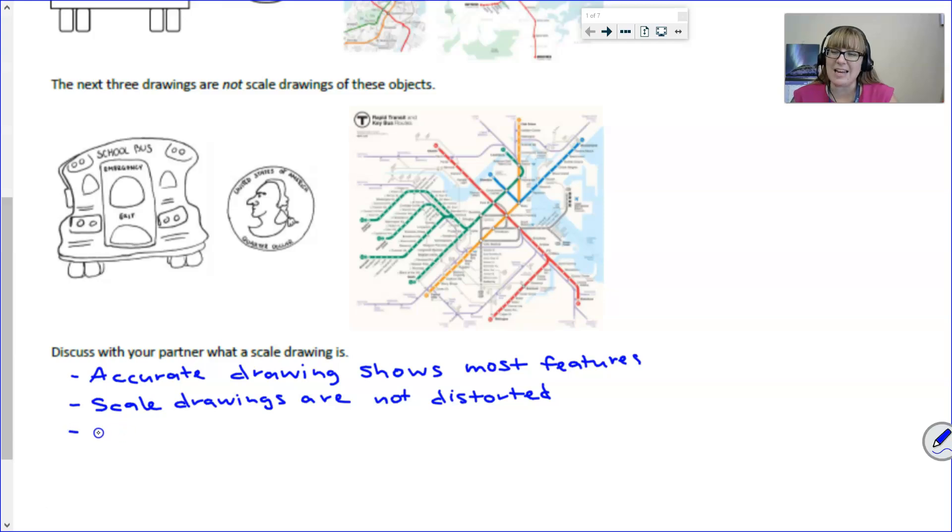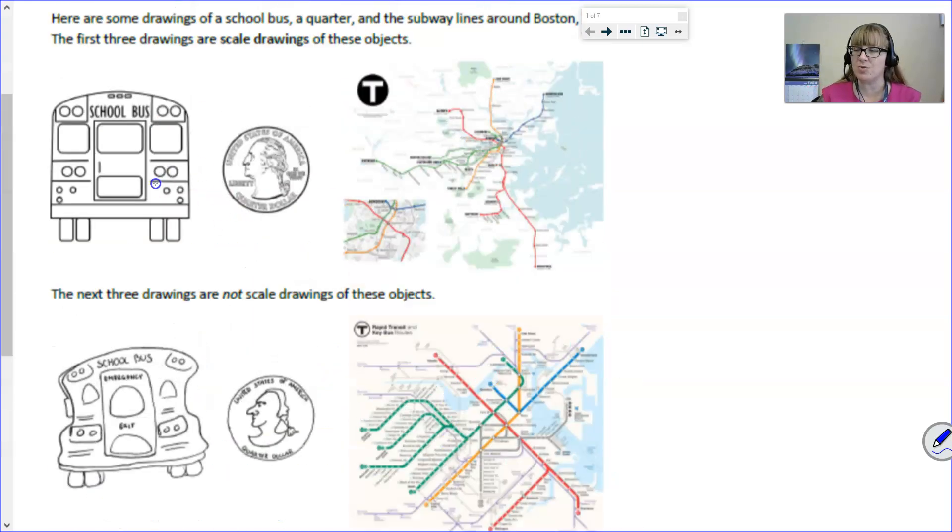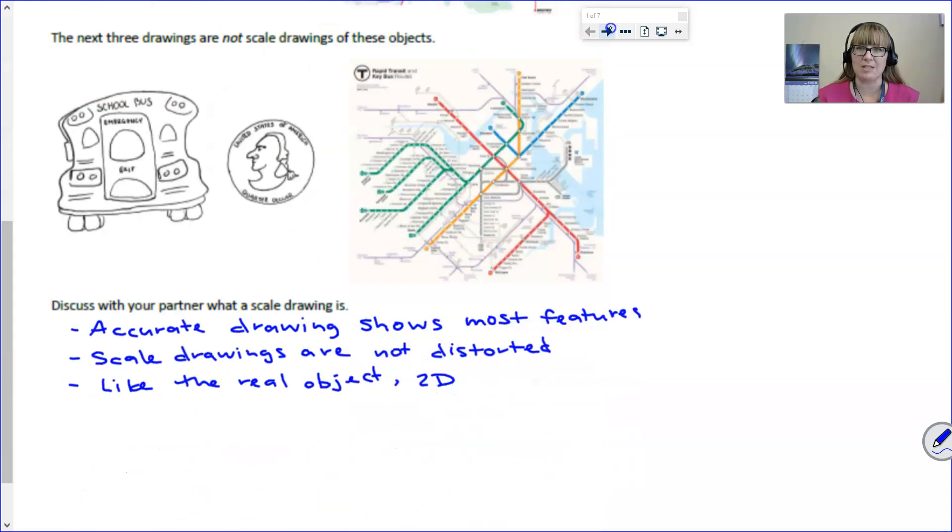A scale copy is like the real object. However, even though it's like the real object it is just two-dimensional. Since it's two-dimensional you can see that in this scale drawing of the bus we don't see the whole entire bus. All we see is the representation of the back and we don't see the whole quarter. It's just a two-dimensional representation.